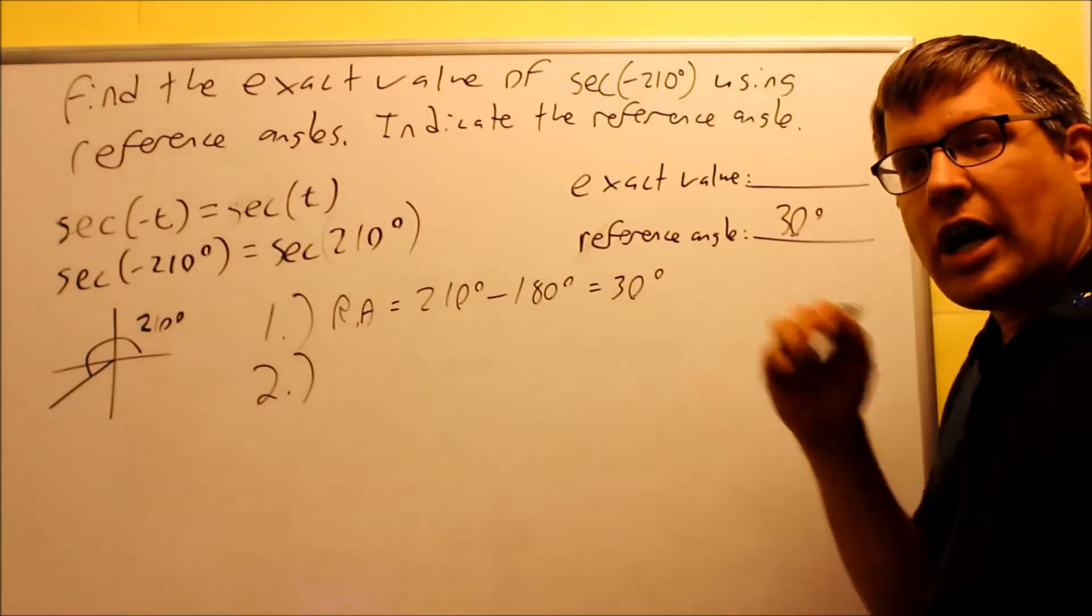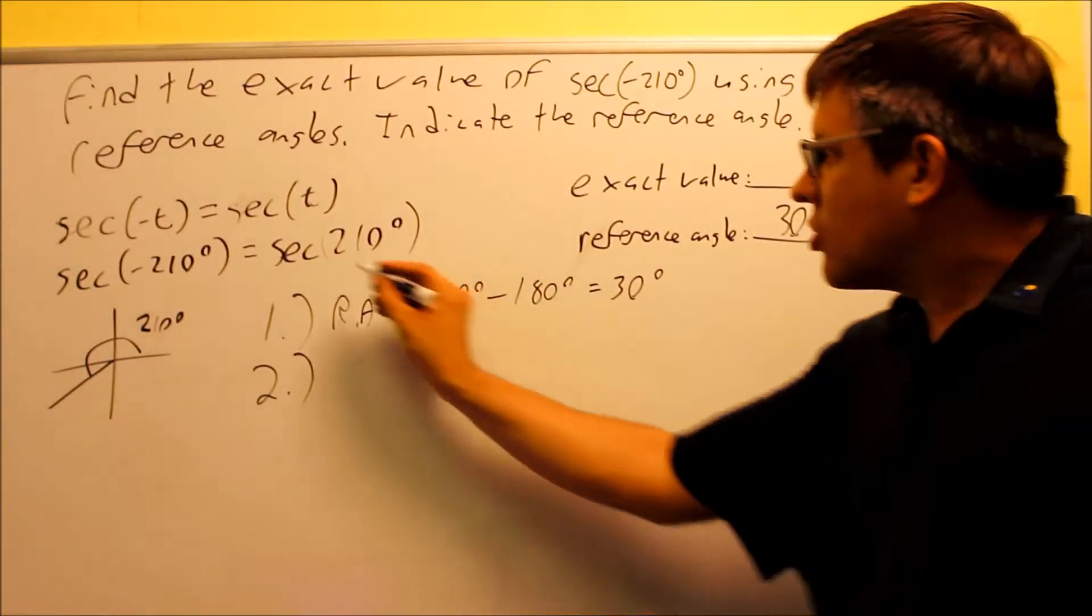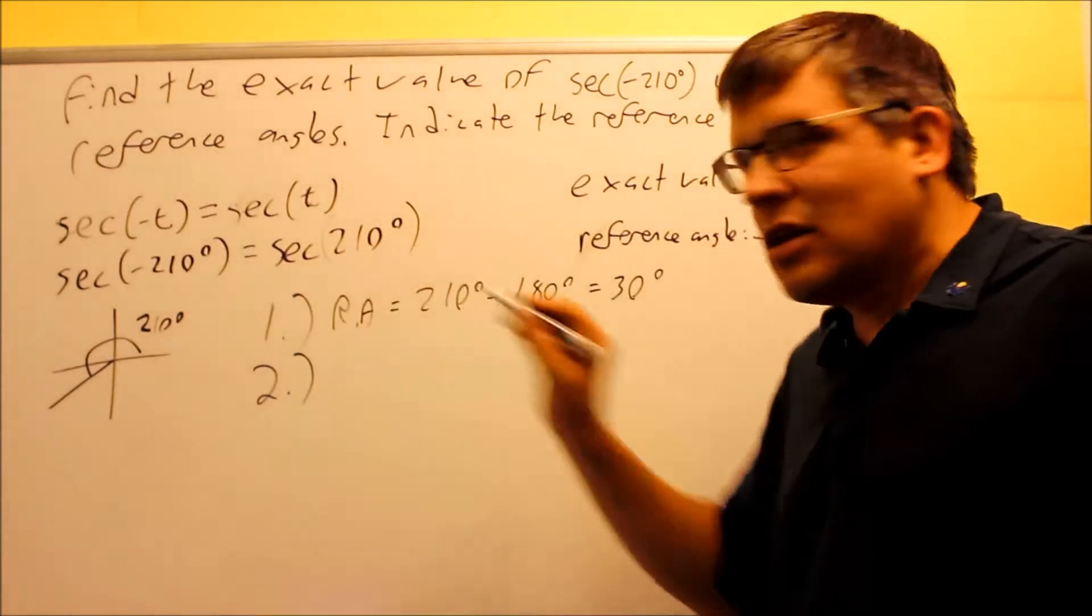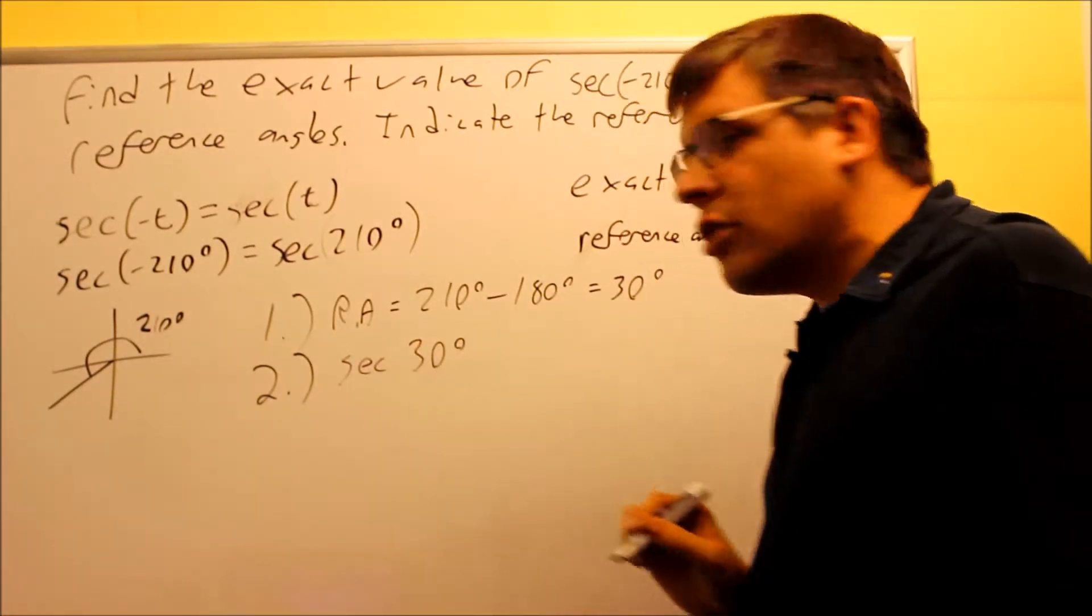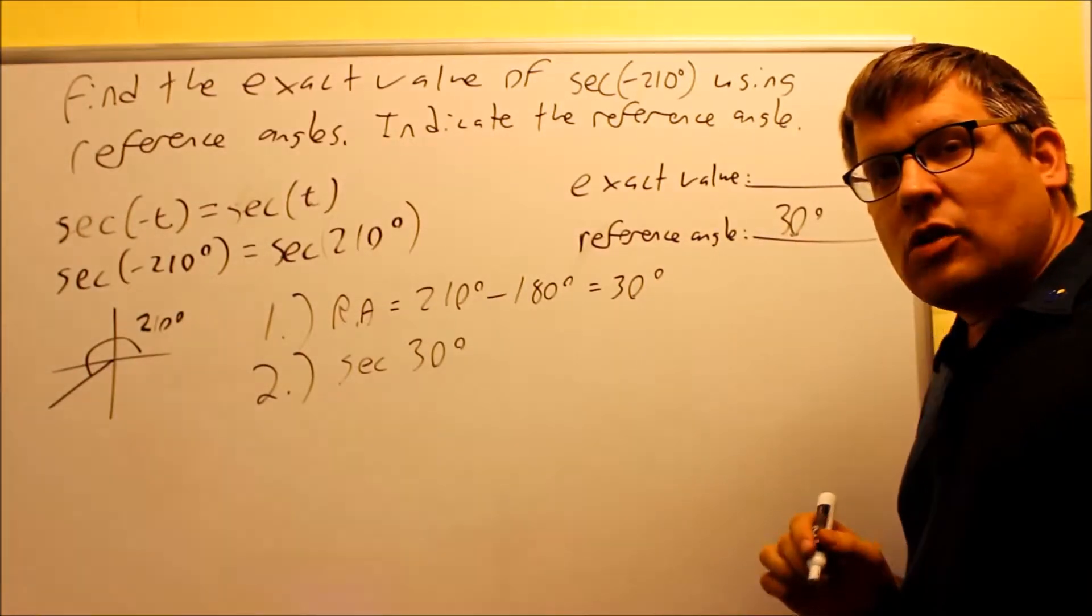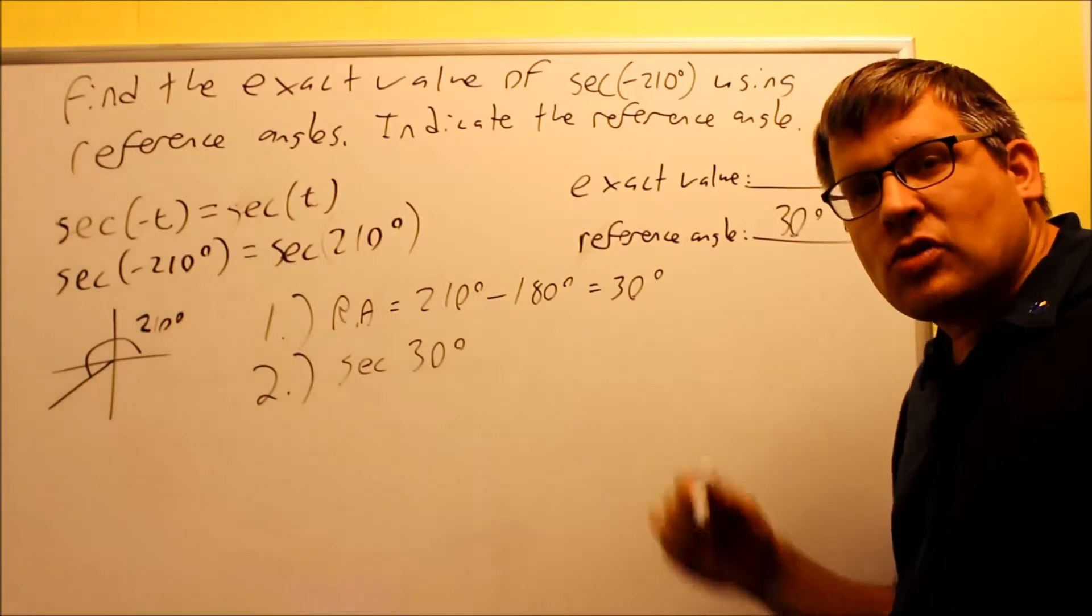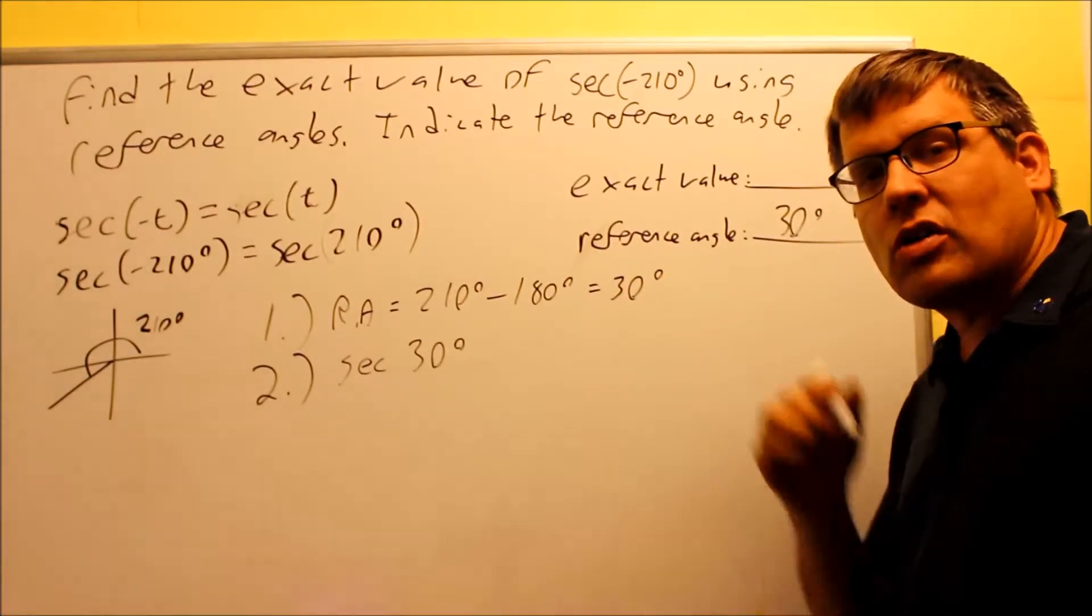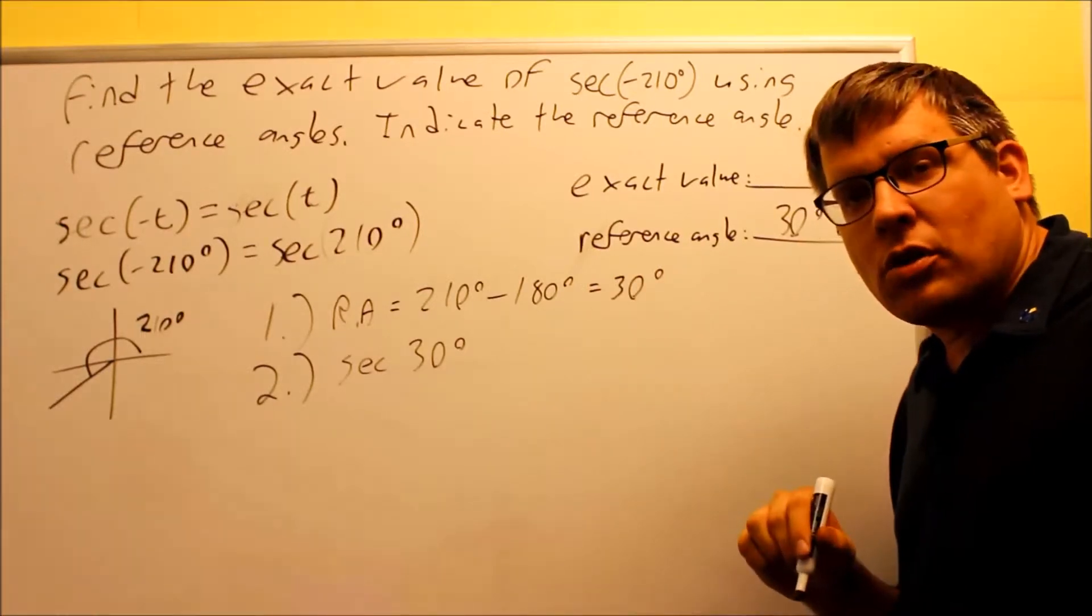So second step, you apply the trig function to the reference angle. What's the trig function? It's this one right here. It's secant. So I need to do secant of 30 degrees. Now to do secant 30, we have a couple different options of how to do that. We know that secant is the reciprocal of cosine. So I could just go to my table, look at cosine 30 degrees, and then take the reciprocal of that number, and that's going to be my answer.